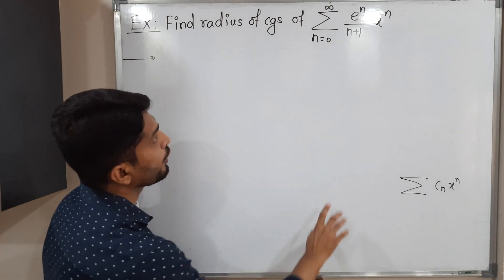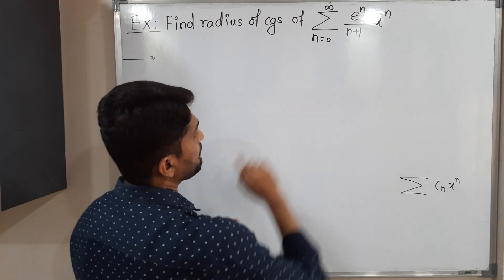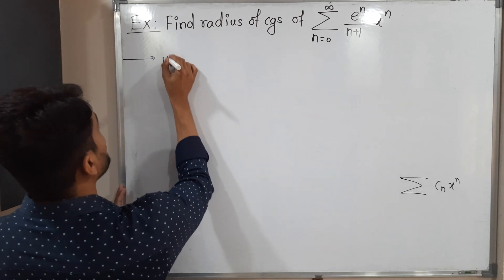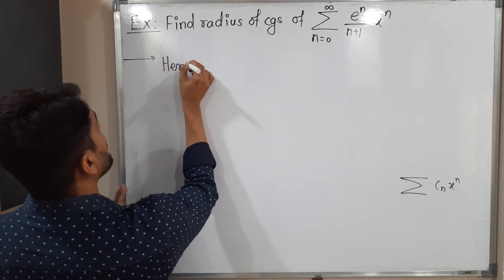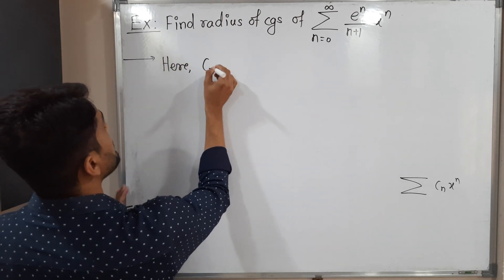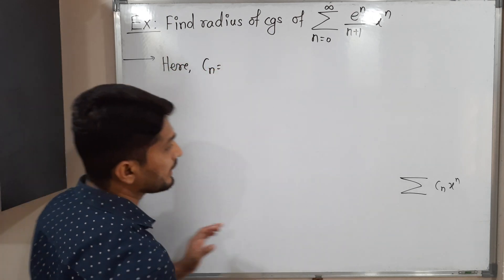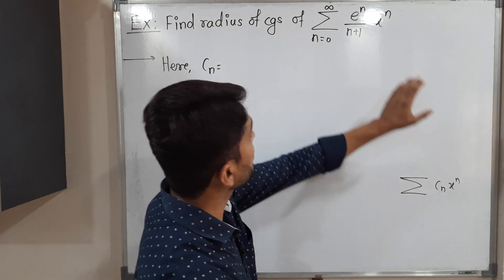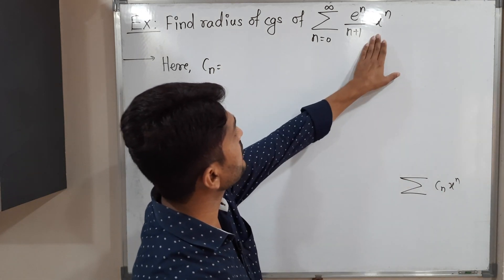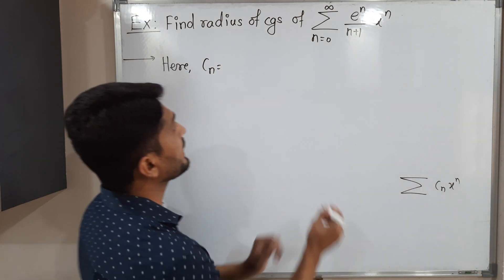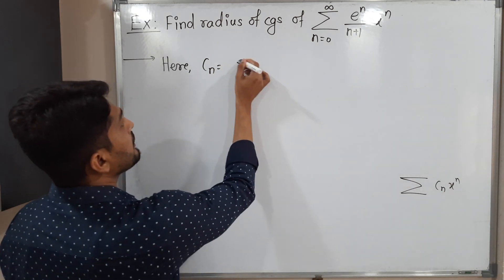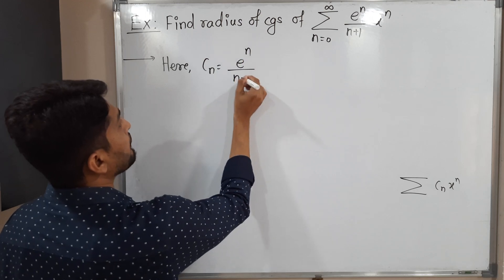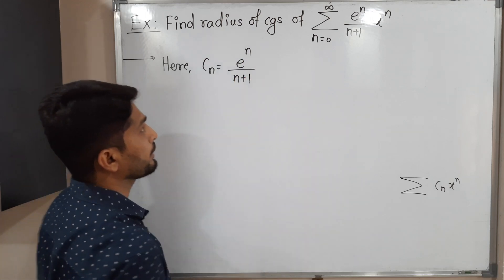So this is the standard form and this is the given power series. Can you tell me what C_n is? C_n is the multiple of x^n. Here the multiple of x^n is e^n divided by (n+1).